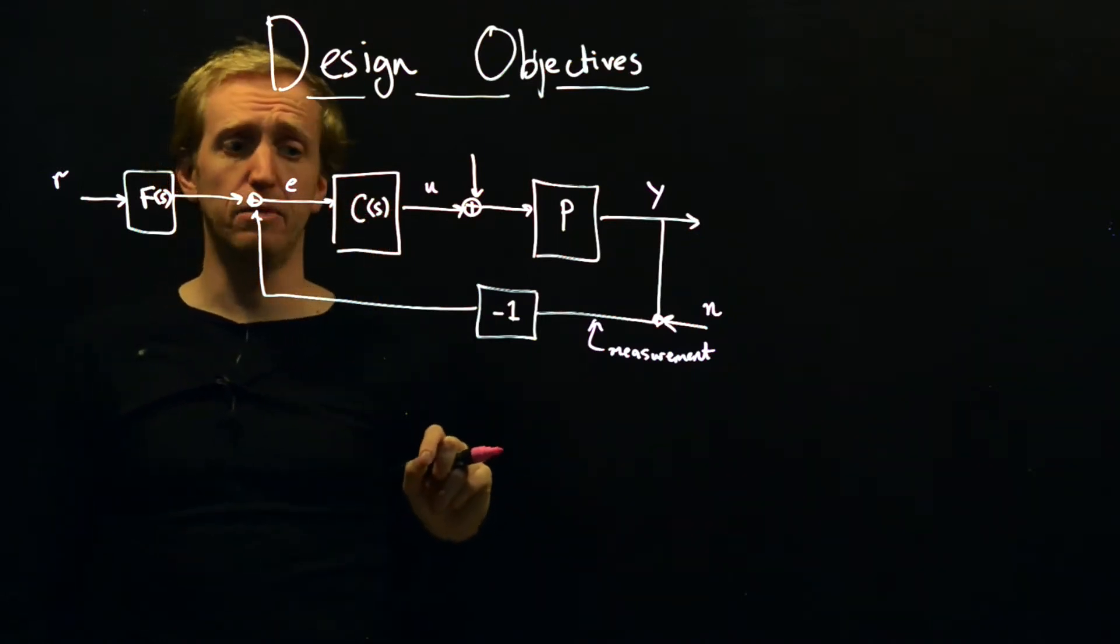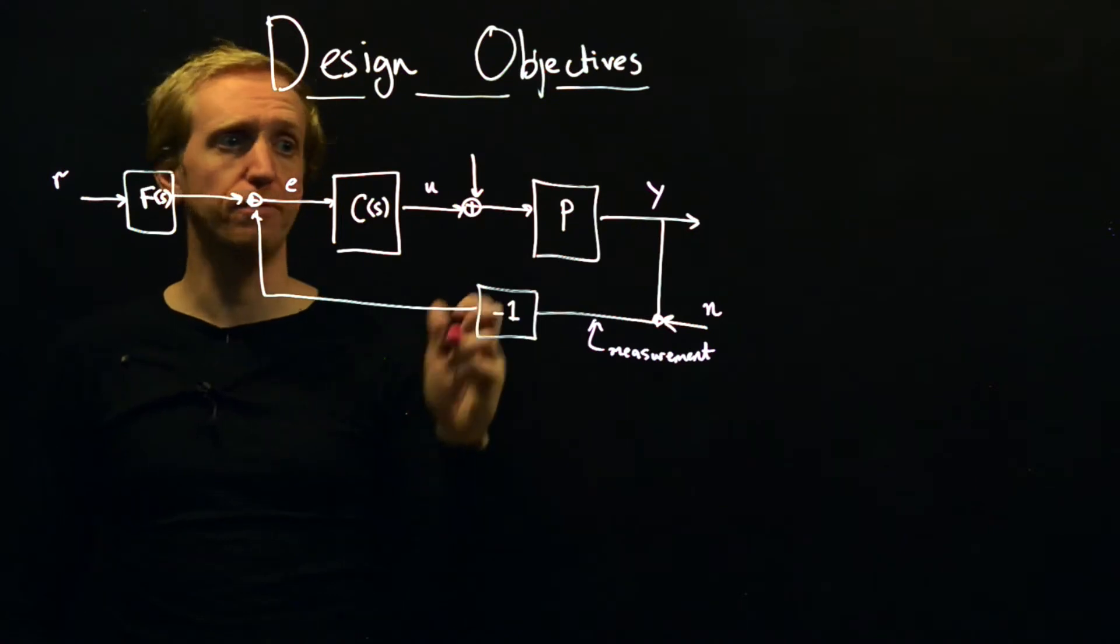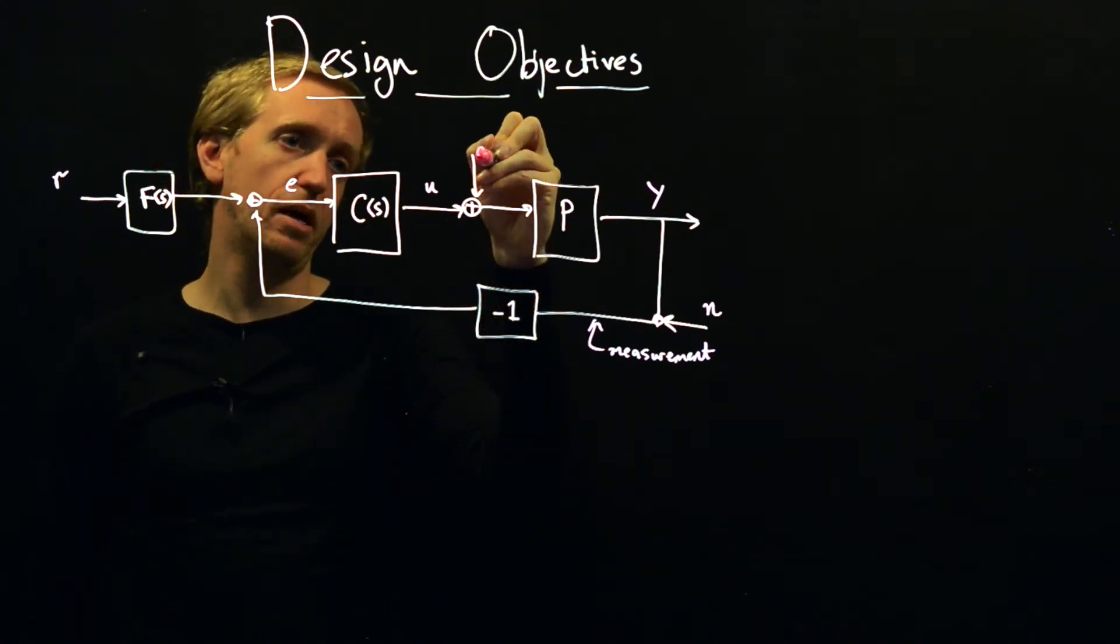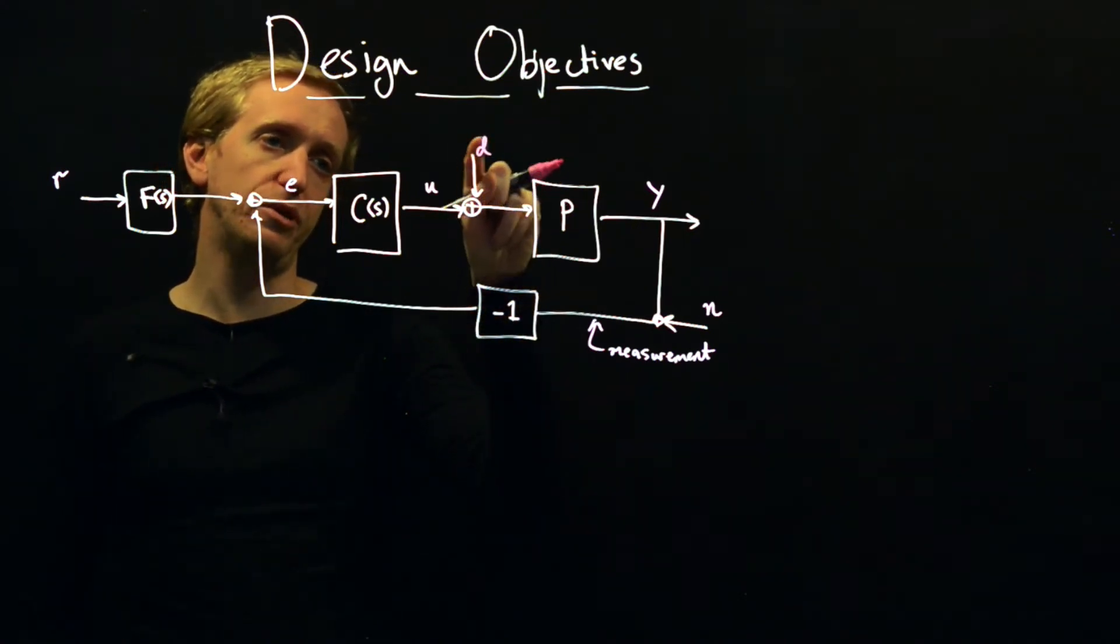We have this error reflecting how far we are away from where we want to be, and based on that we choose our input. This is the controller that we're going to be focusing on throughout this lecture. So this determines how we should pick our inputs based on how close we are to our objectives.